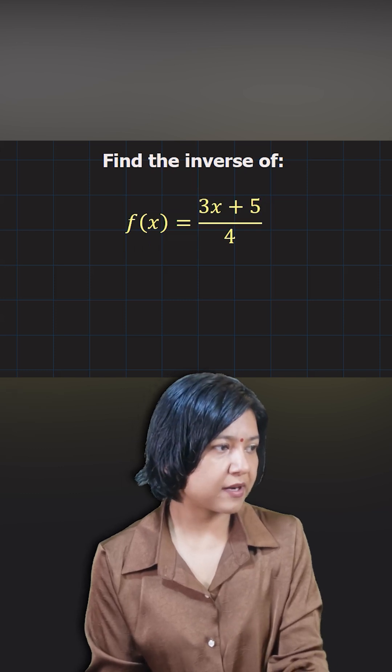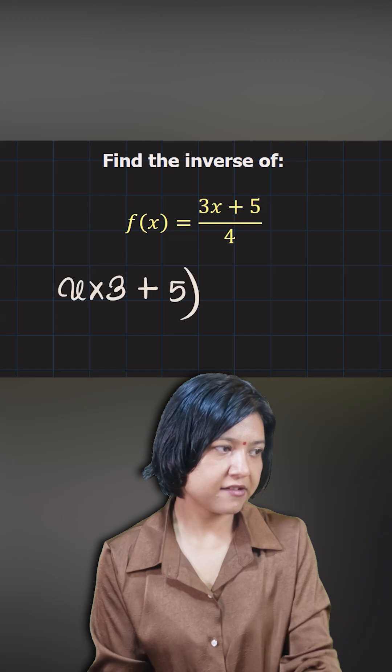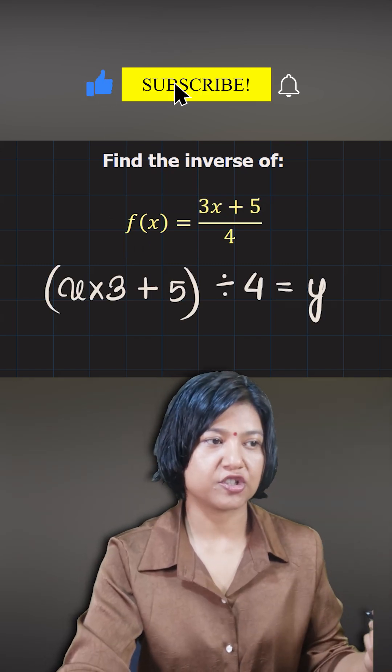You see the input x has been multiplied by 3, added to 5, and then it has been divided by 4. That has been giving you the output here for the first function.